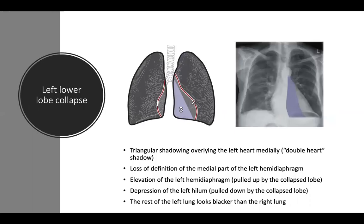That was an example of left lower lobe collapse. Features include triangular shadowing overlying the left heart medially (also called double heart shadow), loss of definition of the medial part of the left hemidiaphragm, elevation of the left hemidiaphragm, depression of the left hilum, and the left heart border is not obscured, with the rest of the lung looking blacker than the right. The diagram shows: one — right heart border, two — left heart border, three — triangular shadowing (double heart shadow). The radiograph shows triangular opacity behind the left heart shadow with decreased left lung volume, with the left lower lobe highlighted in purple.